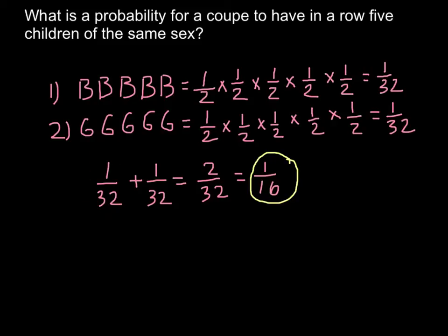So this is one event and this is the second event. And because these two events cannot happen simultaneously, so when we have all five children boys, we cannot have simultaneously all five children to be girls. So in this case, we have to use a rule of addition.